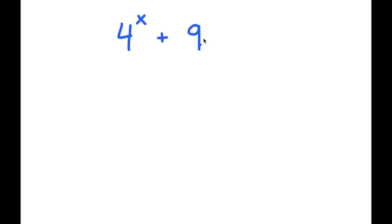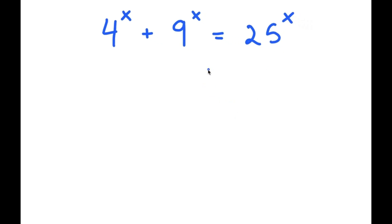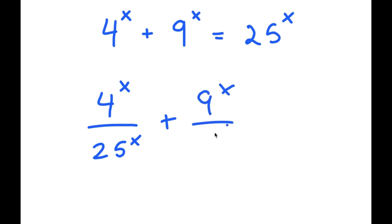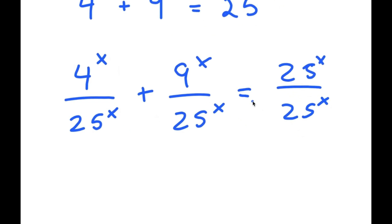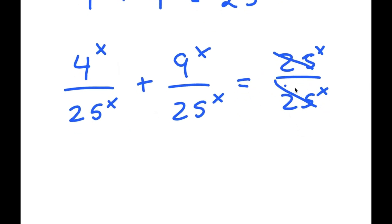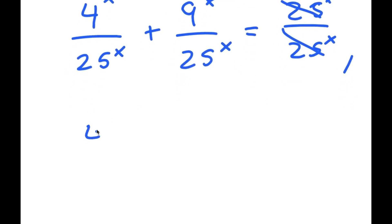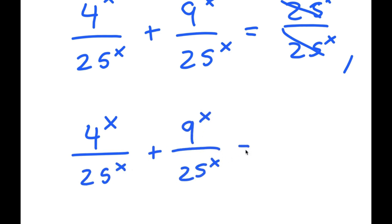In this video, I'm going to solve the equation 4 to the power of x plus 9 to the power of x is equal to 25 to the power of x. To solve this, I'm going to start off by dividing every term by 25 to the power of x. So I get 4 to the power of x divided by 25 to the power of x plus 9 to the power of x divided by 25 to the power of x. The 25 and 25 cancel out, so now I have 4 to the power of x over 25 to the power of x plus 9 to the power of x over 25 to the power of x is equal to 1.